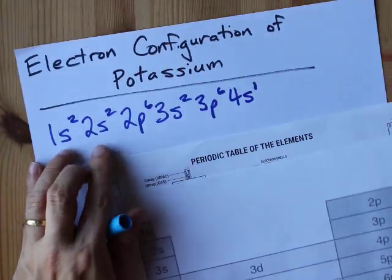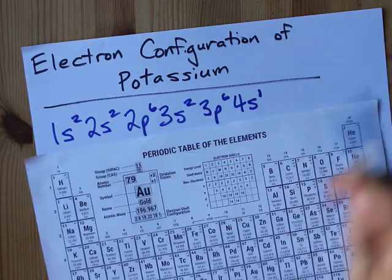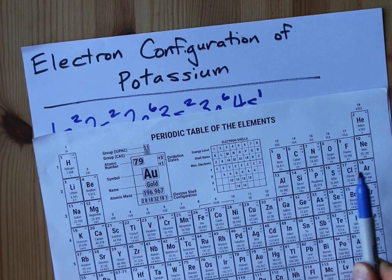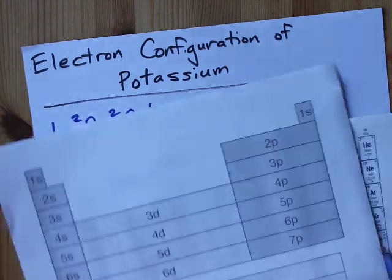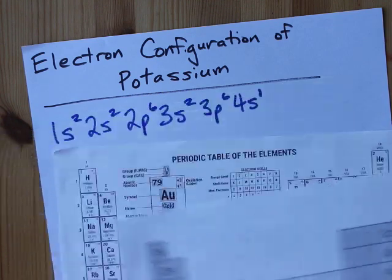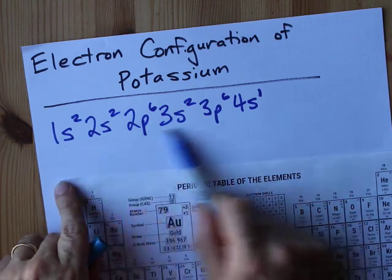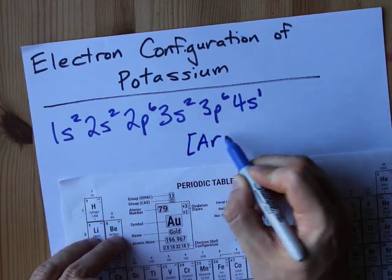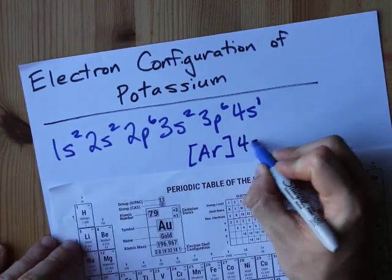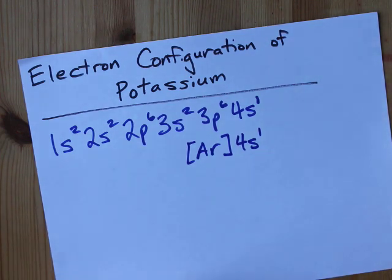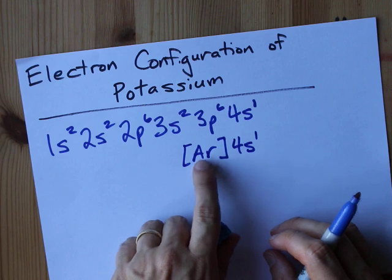This is the full electron configuration of potassium: 1s2 2s2 2p6 3s2 3p6 4s1. You might be asked for what's called shorthand. Shorthand means go to the previous noble gas — in this case, it's argon. Argon ends at the 3p row, so all the way up to 3p6 can just get replaced by AR in square brackets, and then you just show the extra, which is 4s1. It shows that the inner shell electrons up to the end of 3p6 are identical to an argon atom.